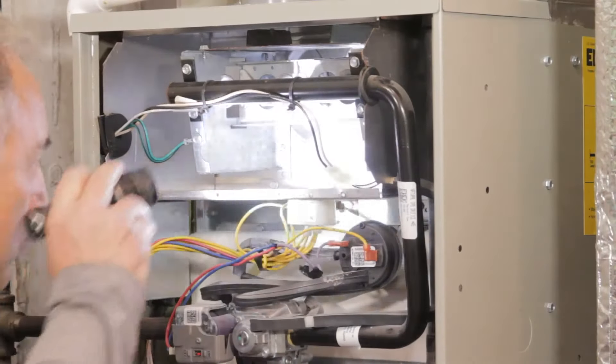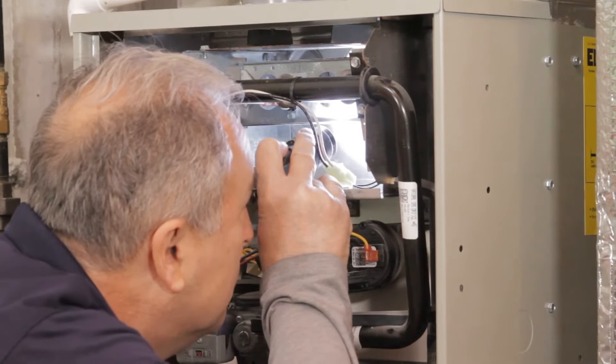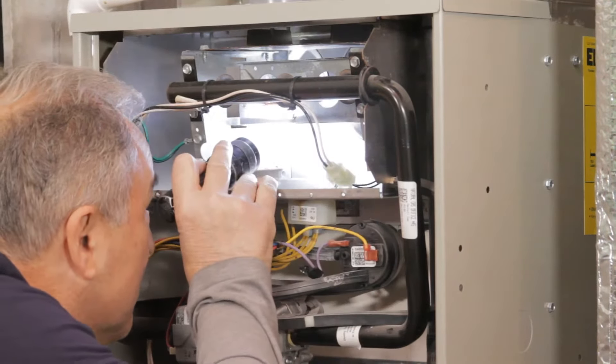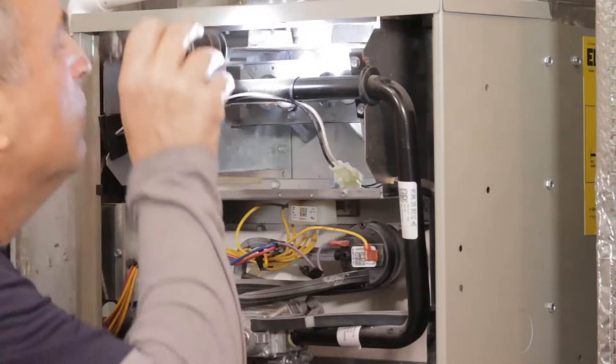Next, we check the heat exchanger for cracks and leaks. A cracked heat exchanger can be seriously dangerous. If there's a heat exchanger crack, it can cause carbon monoxide gas to leak out of your gas furnace.